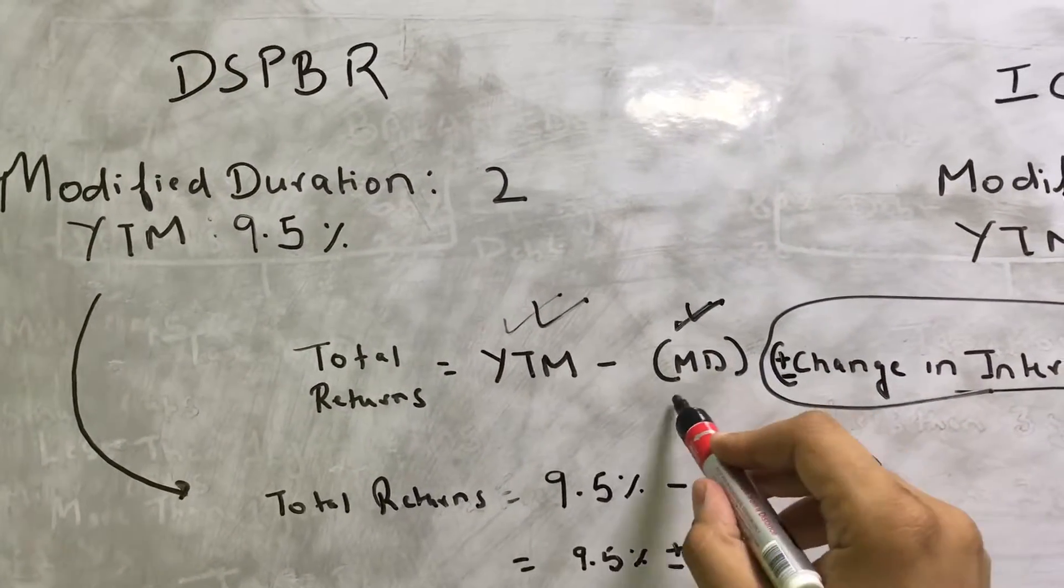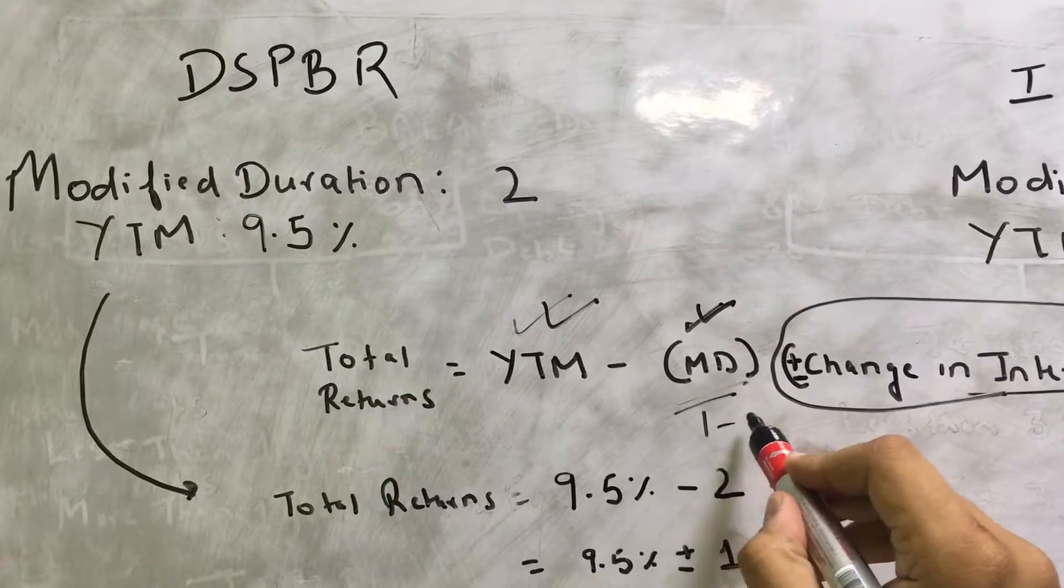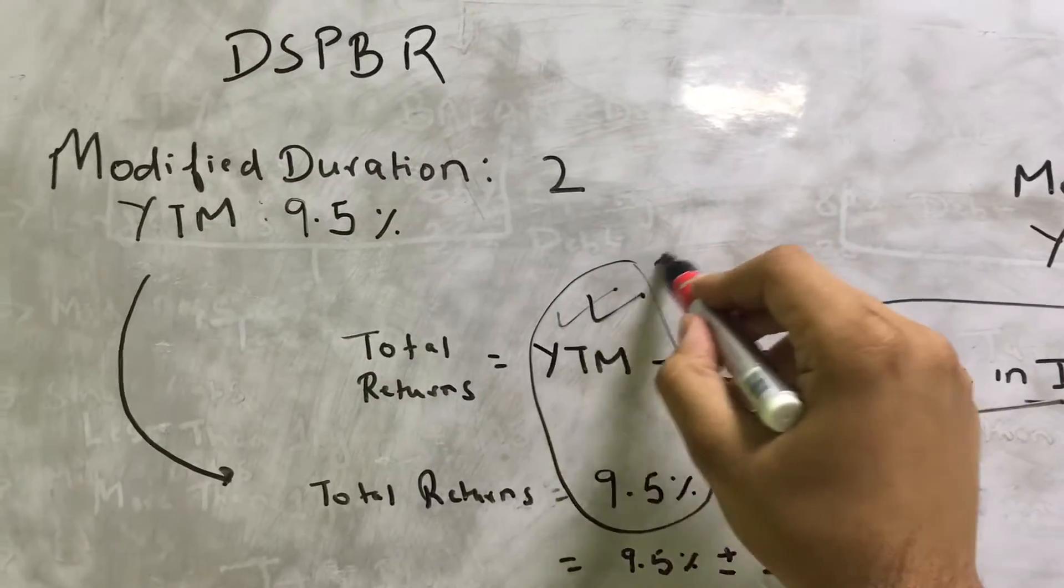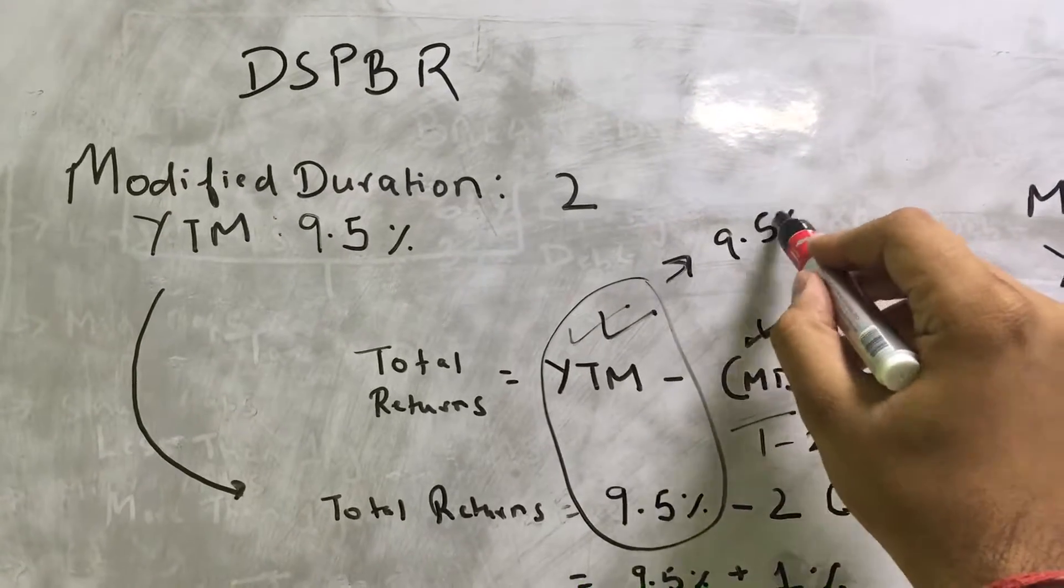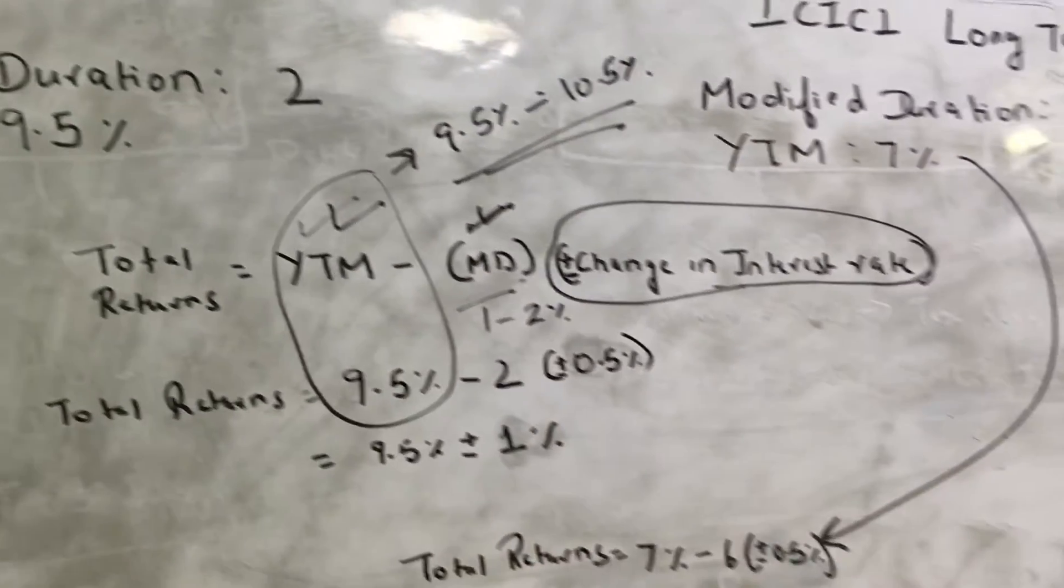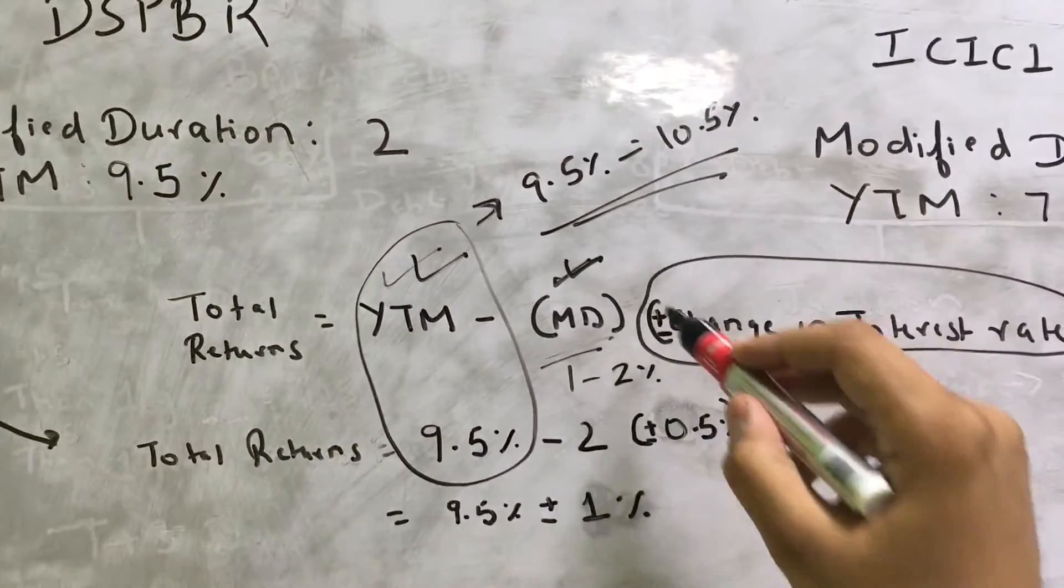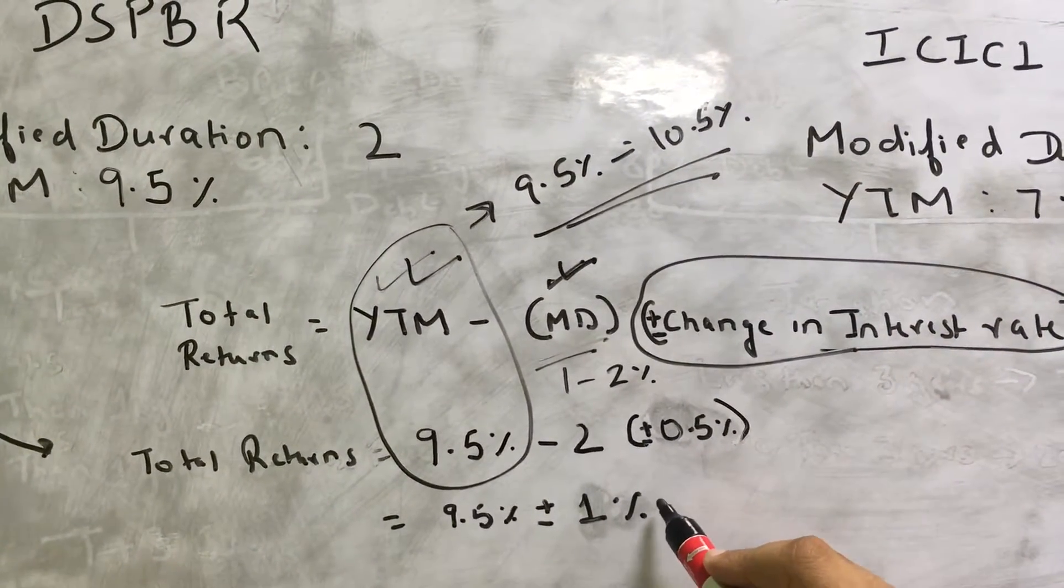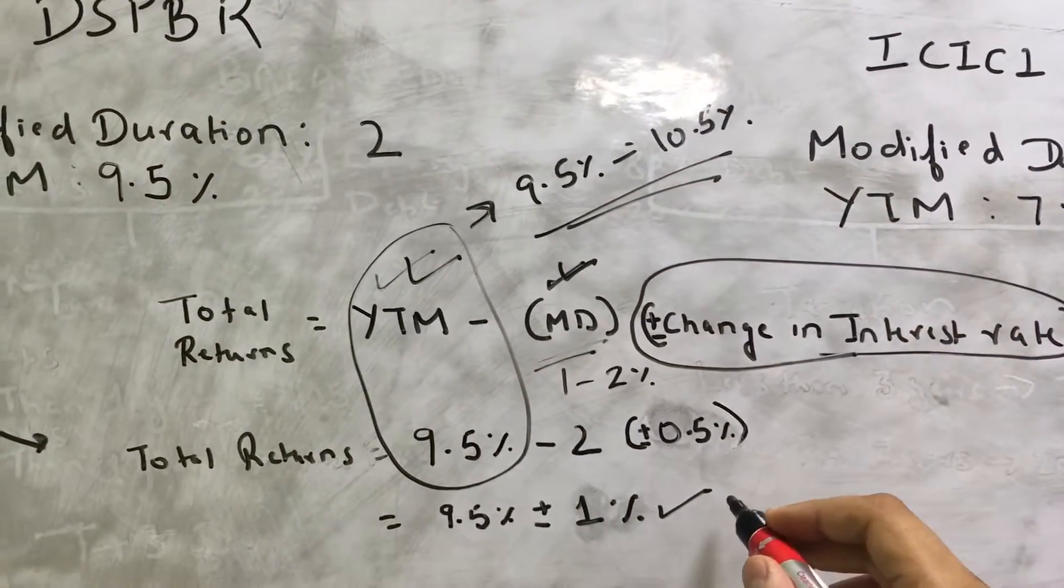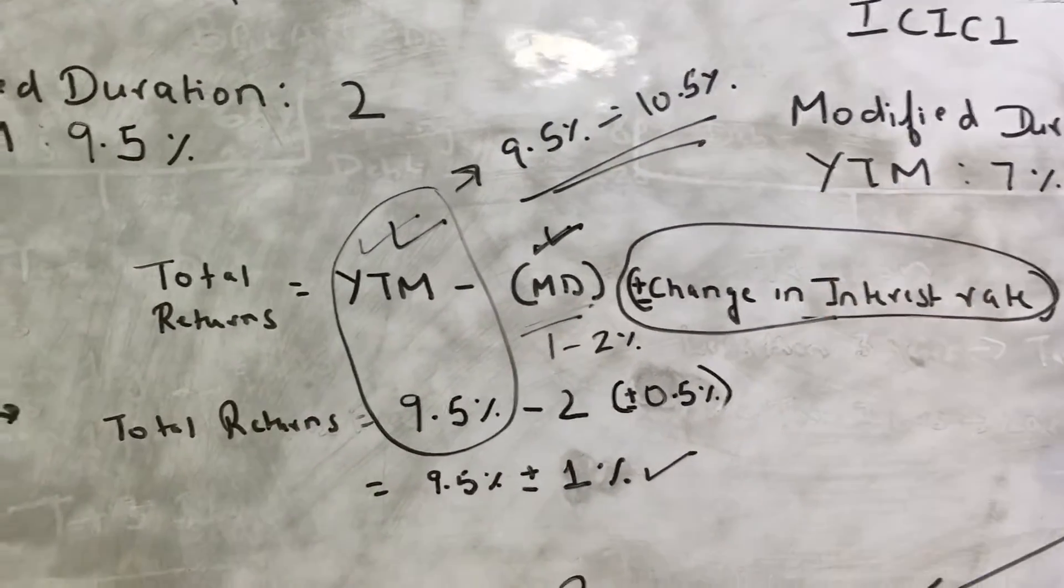So generally we keep the modified duration between one to two percent, not more than that, and a YTM we look at about 9.5% to about 10.5%. If we get that kind of a YTM, so that even if there is a rate cut interest goes up to 11.5%, but even if there's a rate hike the interest doesn't go down very much.